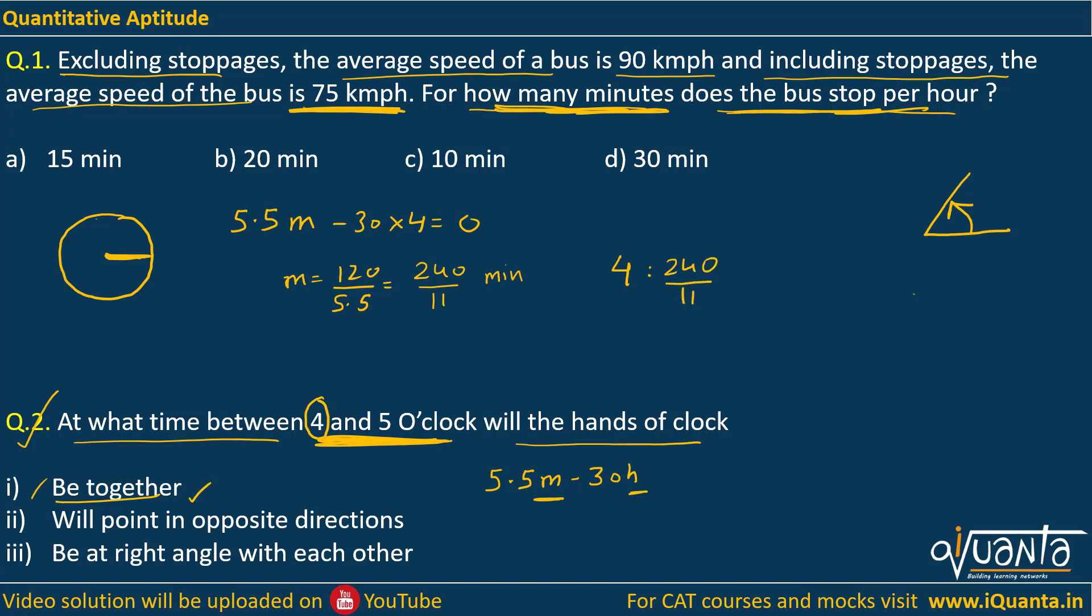So 4 hours and 240 by 11 minutes, so that means this should be the time. We can write the answer as 240 by 11 minutes after 4, or post 4. The angle between the hands of the clock will be zero. Similarly, let us